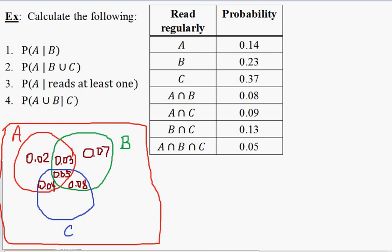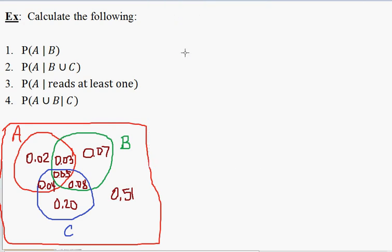And finally for C, in blue, we've already drawn these three: 0.04, 0.05, and 0.08. Those add up to 0.17. So if their total is 0.37, we need to have 0.20 for this part. So if we add up everything — 0.02 plus 0.04 plus 0.05 plus 0.03 plus 0.07 plus 0.08 plus 0.20 — that's 0.49 for everything inside the events. So we have 0.51 as the probability of none of the events happening. Adding up all the numbers should give us 1.